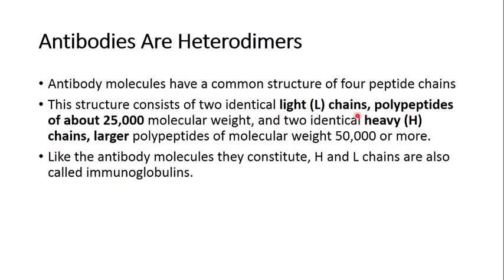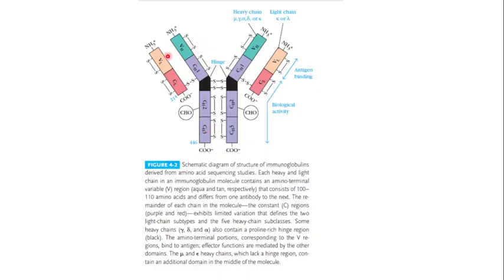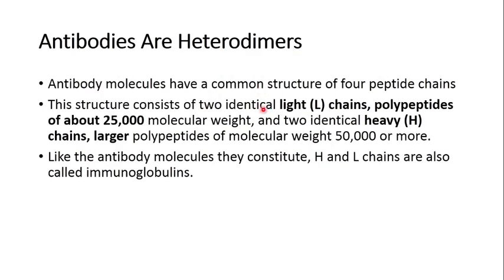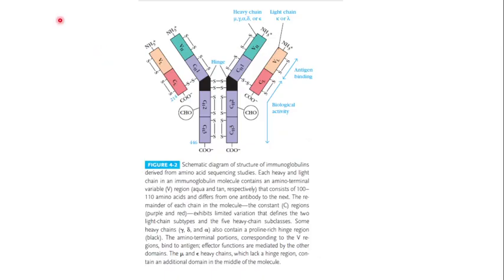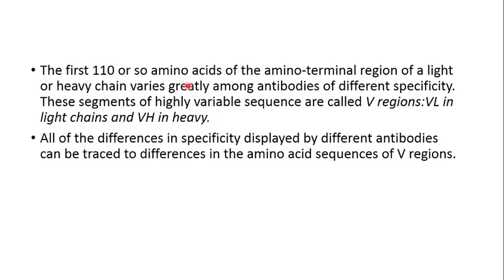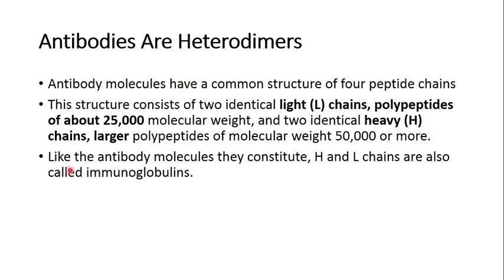The structure consists of two identical light chains, each approximately 25,000 daltons in molecular weight, and two identical heavy chains, which are larger polypeptides of more than 50,000 daltons. These two heavy chains and two light chains together form the immunoglobulins or antibodies.